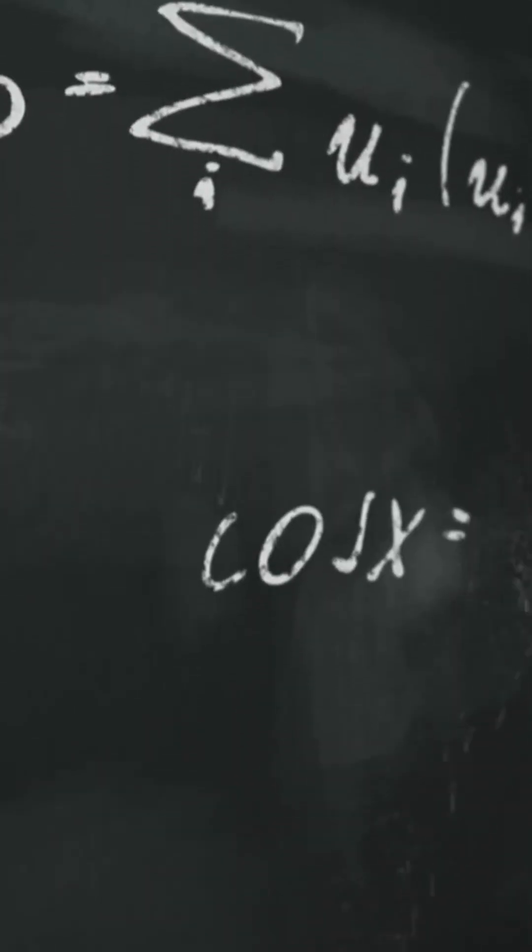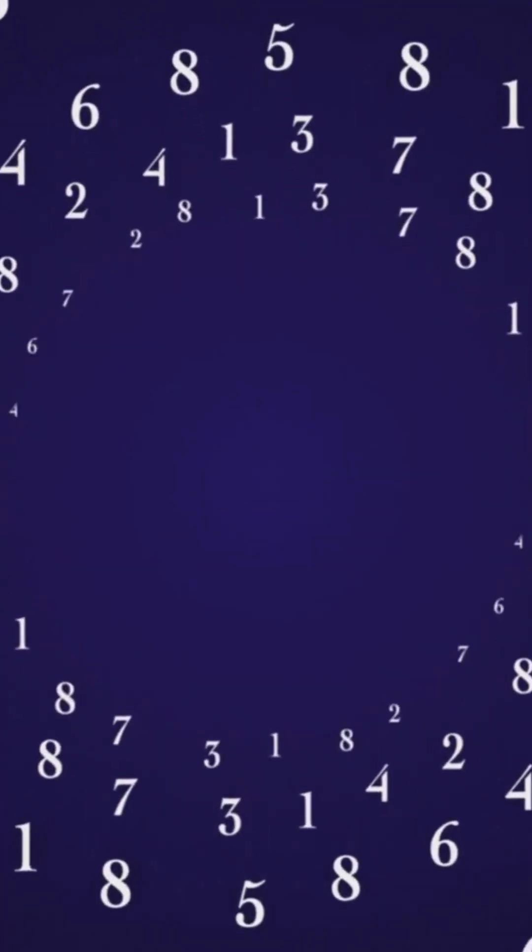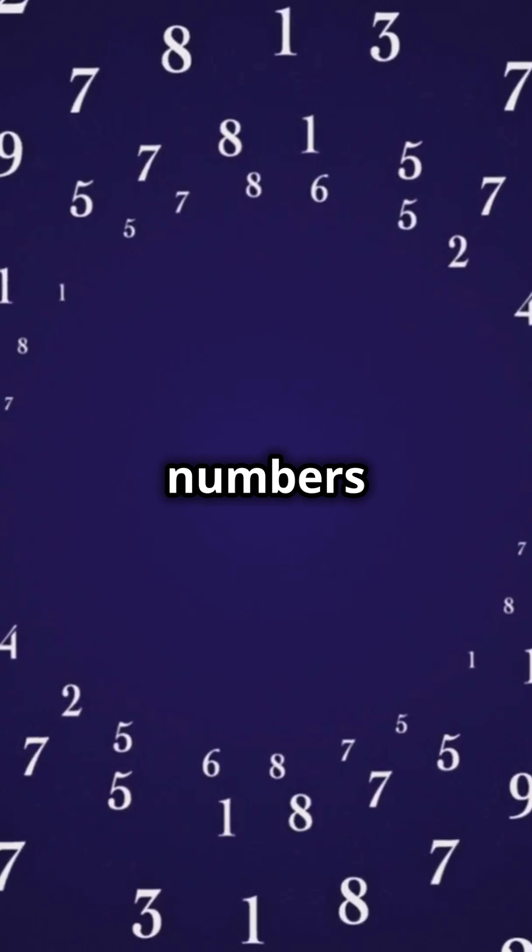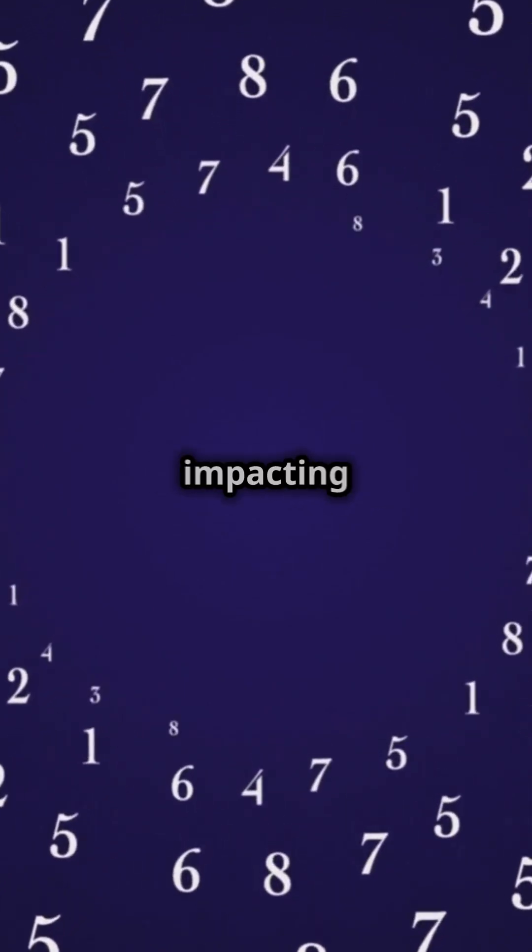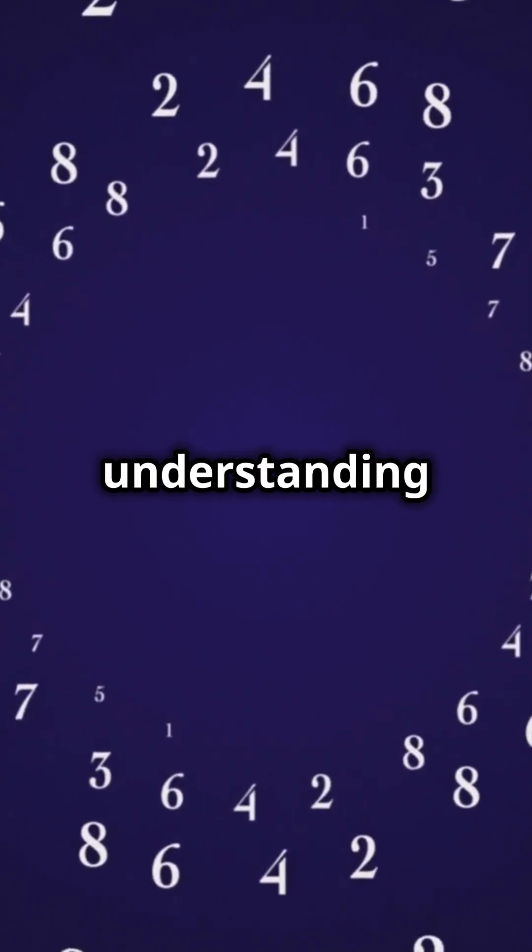Why does this matter? Because it could revolutionize our understanding of prime number distribution. Think of it as the blueprint for where primes show up on the number line. This blueprint would allow mathematicians to predict the occurrence of prime numbers with greater accuracy, impacting everything from encryption algorithms to the fundamental understanding of number theory.